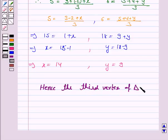Hence the third vertex of triangle is (14,9). This completes the question and the session. Thank you for now, take care, and have a good day.